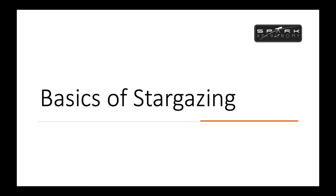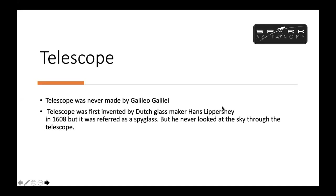In astronomy we measure distance in light years. If you go a little forward, you will understand about telescopes. A telescope is an optical instrument. When I say optical instrument, optical means optics — optics means lenses and mirrors.